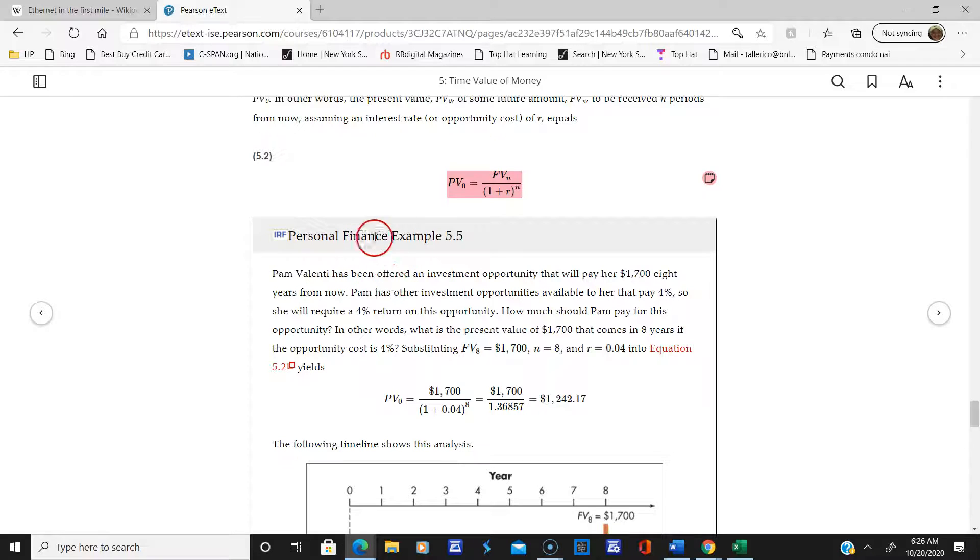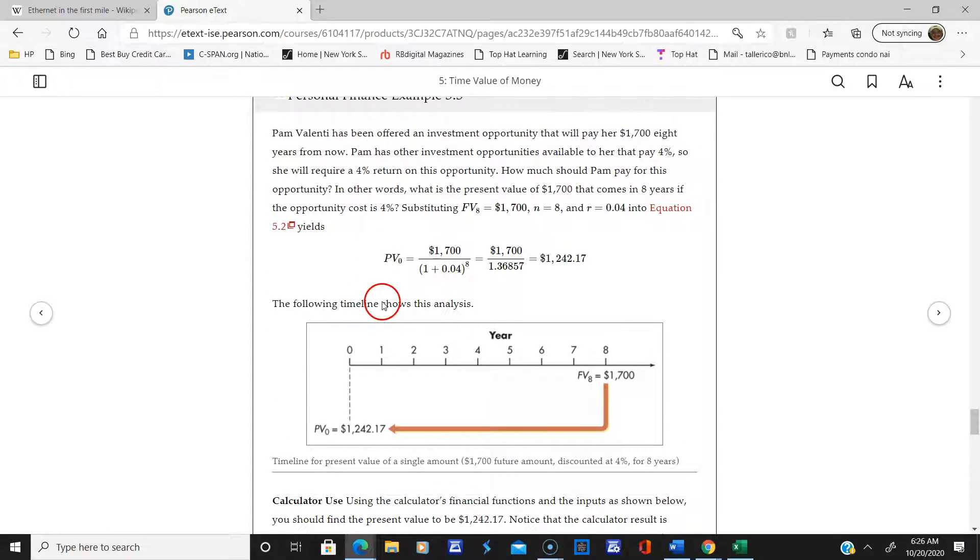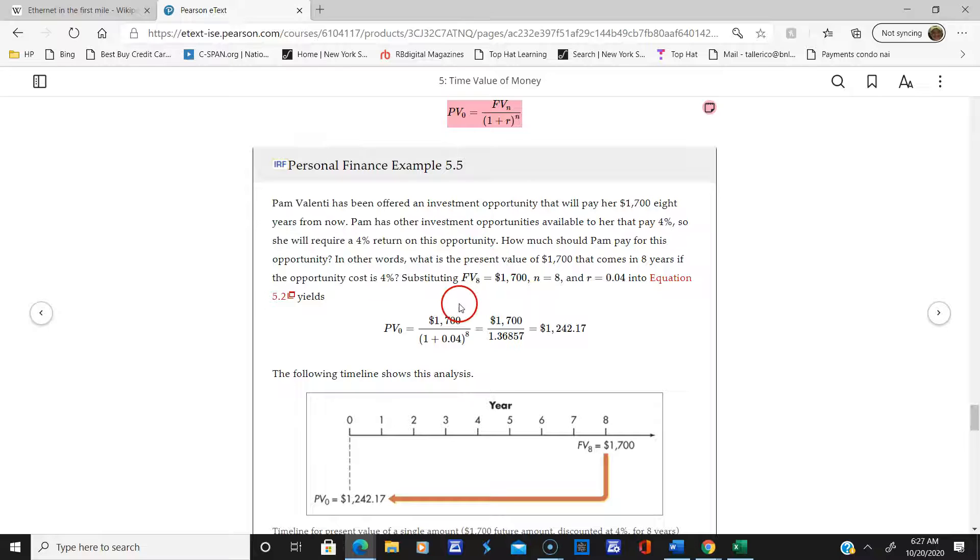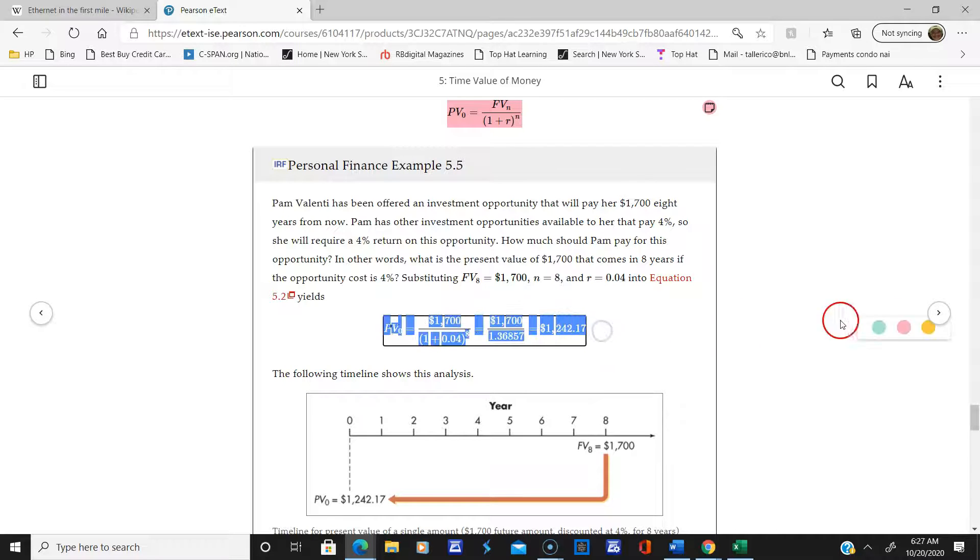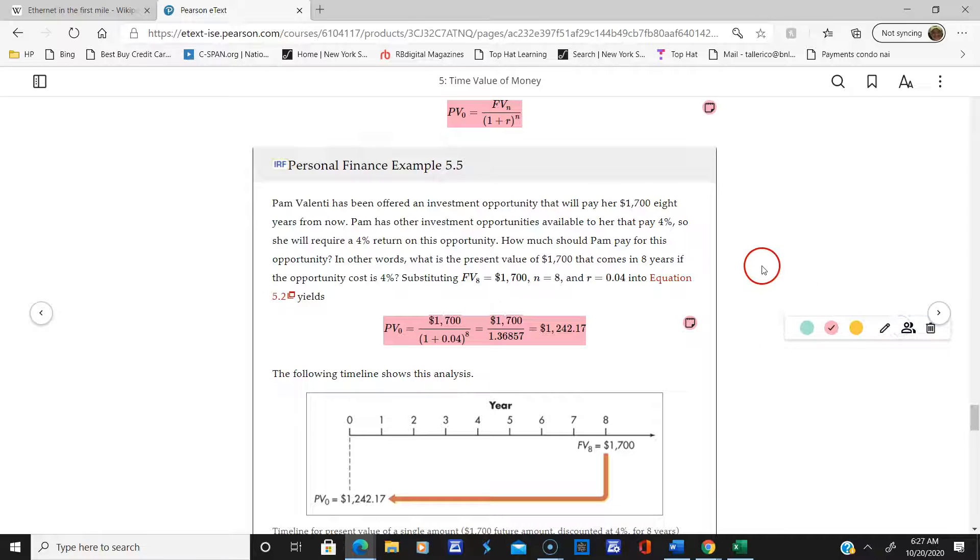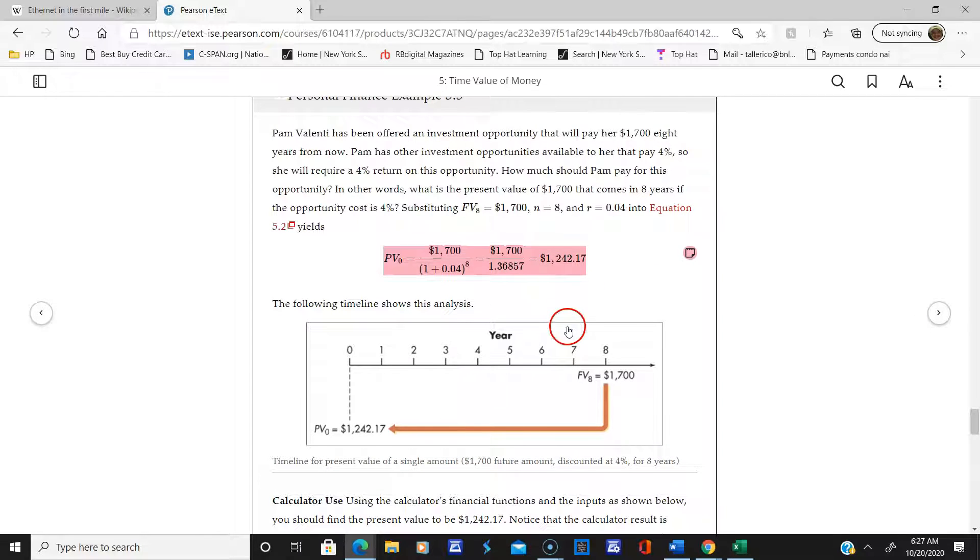Here's another present value example with Pam Valenti. An investment opportunity will pay her $1,700 eight years from now. What should Pam invest today? She should invest $1,242.17. You can see the nice timeline here showing the future and the present.